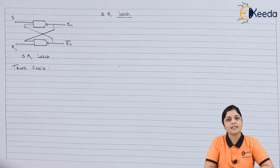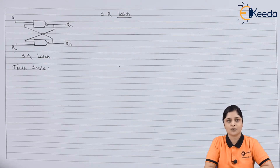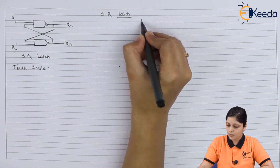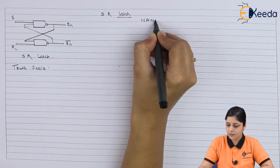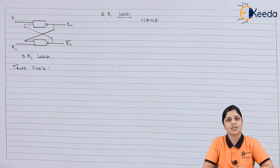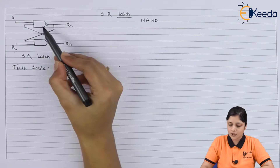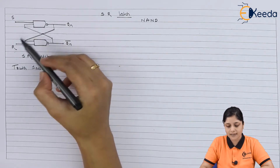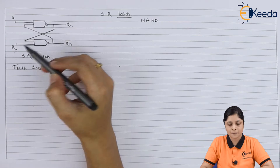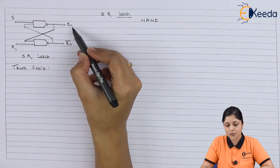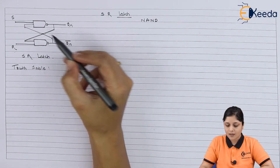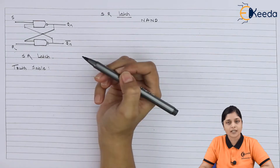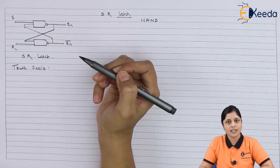Now we will see the diagram of SR Latch consisting of a universal gate — specifically a NAND gate. With the use of the NAND gate we are going to draw the logic diagram. This is the logic diagram for SR Latch. It consists of inputs S and R, and outputs Qn and Qn bar. According to these connections we are getting the output for the latches.